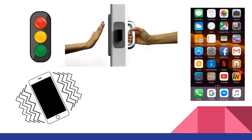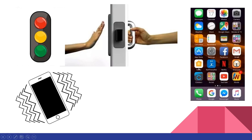Here are some examples of affordance. When we see a signal, we know that red means stop, yellow means ready to go, and green means go. Similarly, when we see a handle, we know that we have to catch and pull. When we sense phone vibration, we know that some kind of message has come — it could be mail, WhatsApp message, etc. When we want to open an app on screen, we see either the app logo or name and then click on it for some kind of action to be performed.